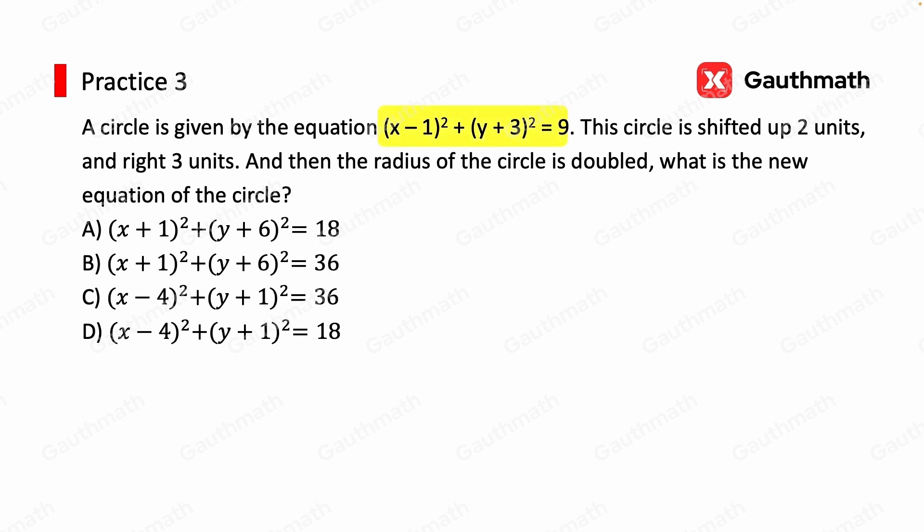We bring out the equation first. x minus a squared plus y minus b squared equals R squared. And we can find the center of the circle to be 1 and negative 3 because plus 3 is essentially minus negative 3. And the radius is 3 because 3 squared equals 9.